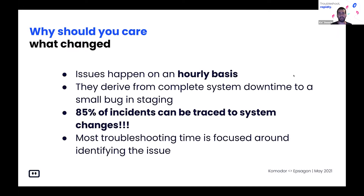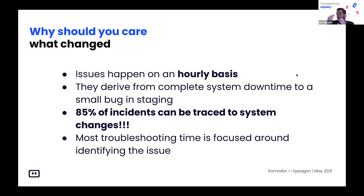So first of all, why should you care about changes? Issues happen on an hourly basis for some companies — it can even be per minute. And when I say issues, it ranges from complete system downtime to small issues in staging, like a bug or anything else. 85% of all incidents can be traced to a system change, meaning that someone somewhere in the organization changed something, and now your application is having problems. Most troubleshooting time is focused around finding out what's the root cause.